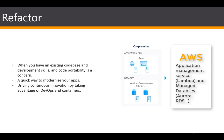Then we have something called the refactor, which is also referred to as repackaging. This strategy involves some change to the application design, but no wholesale changes to the application code. So your app can take advantage of IaaS — infrastructure as a service — or Platform as a Service products within the AWS ecosystem, such as their managed database services.